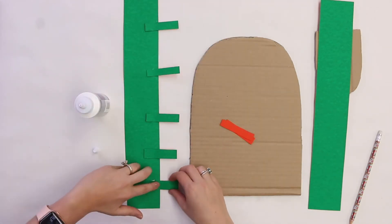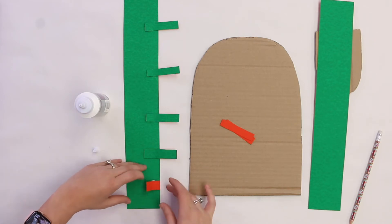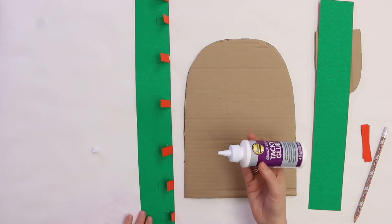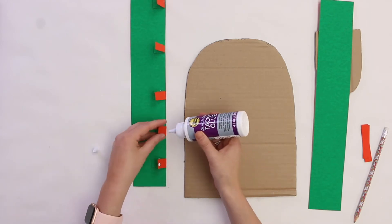While the glue is getting tacky, we're going to create a fold at the end of each one of our supports. All right, for our next step, we're going to put a small dab of tacky glue on the end of each one of our supports.